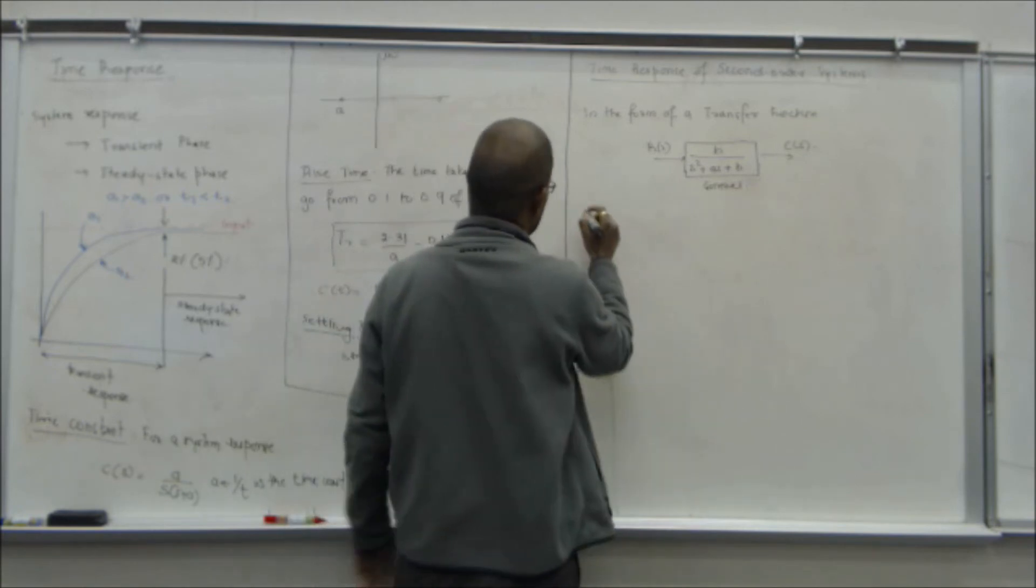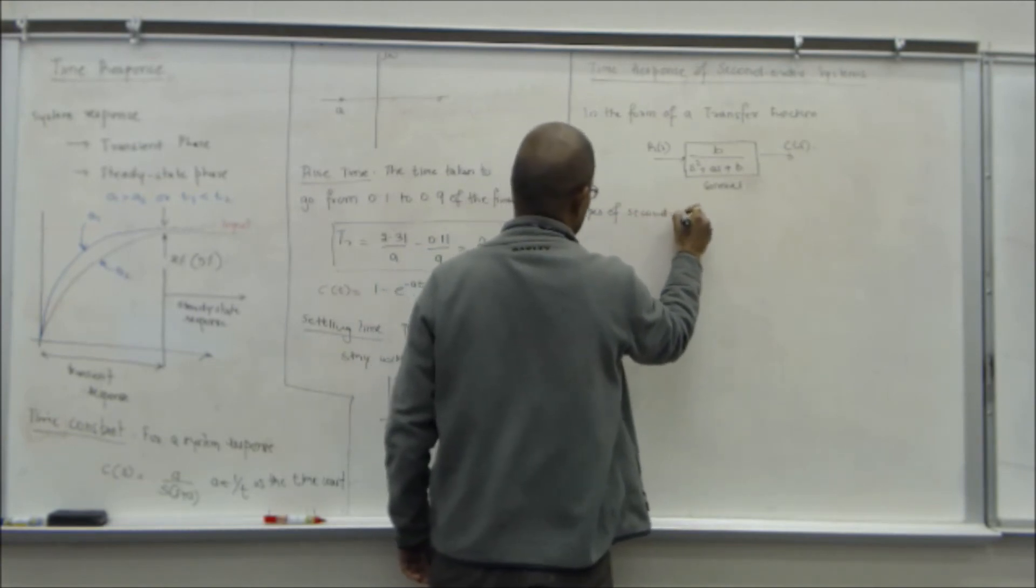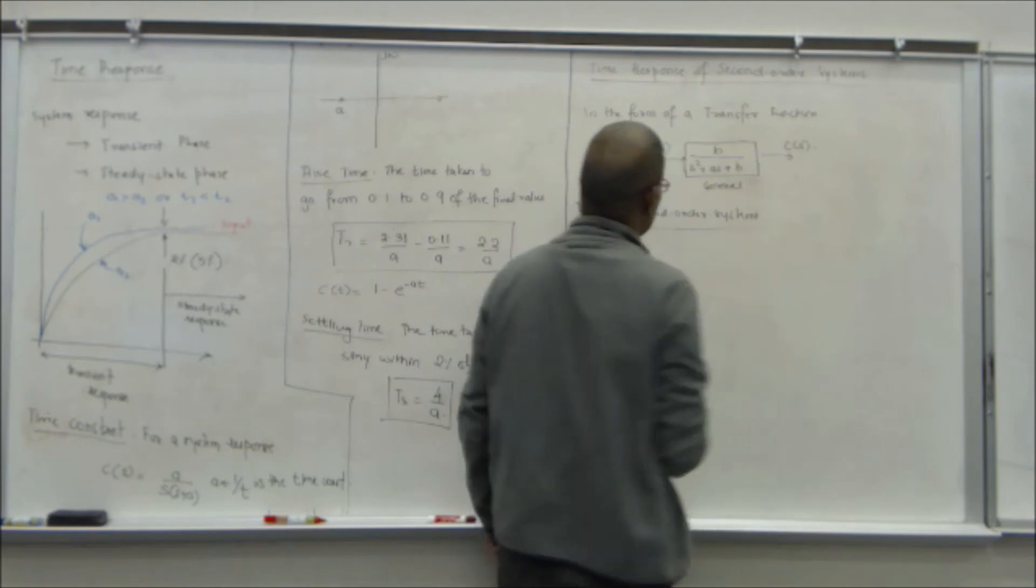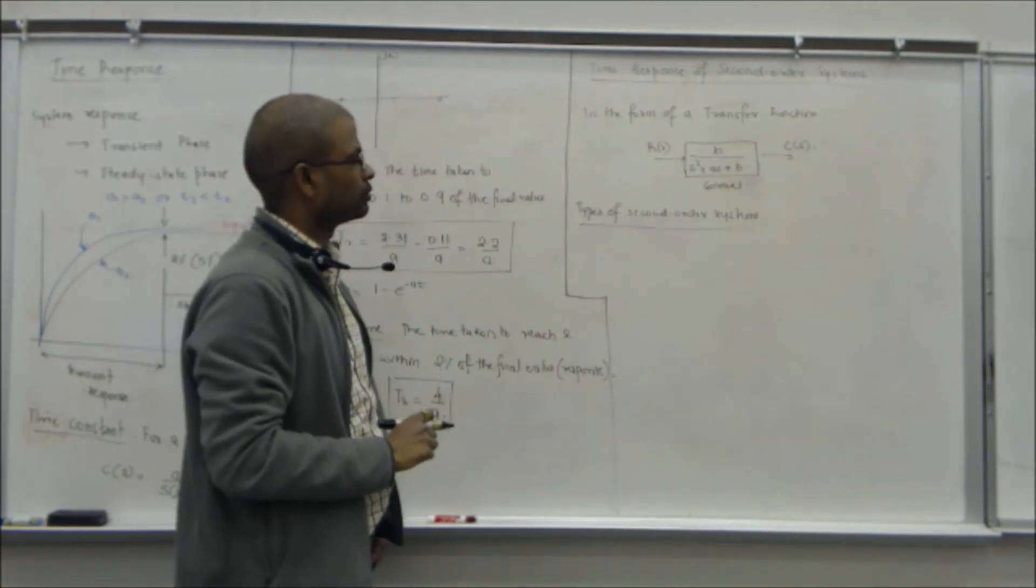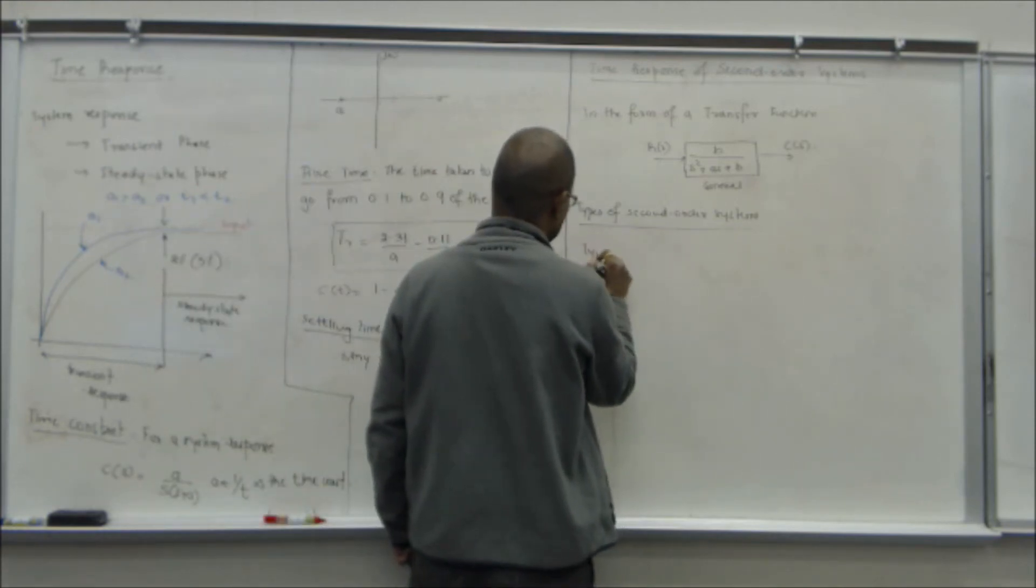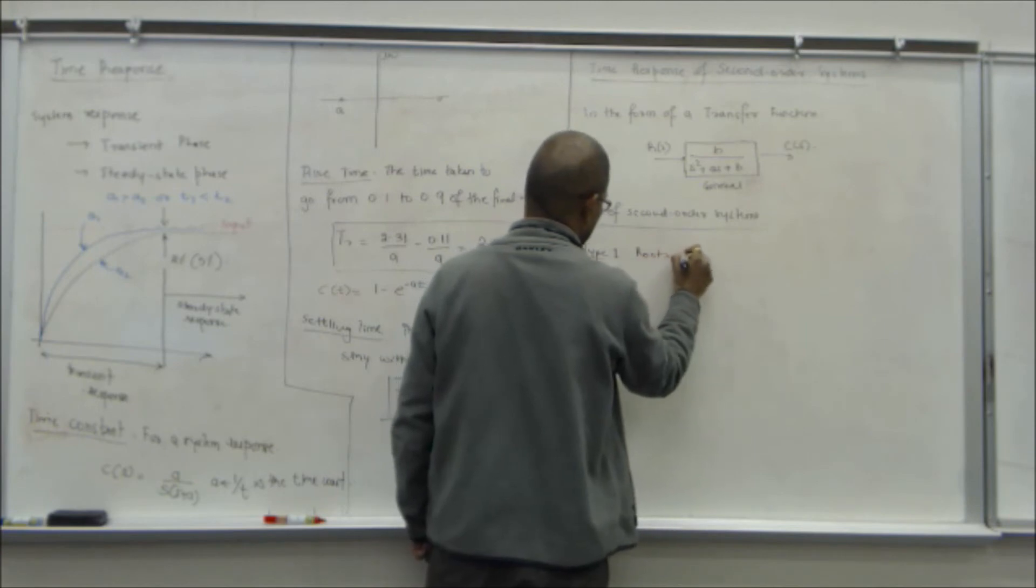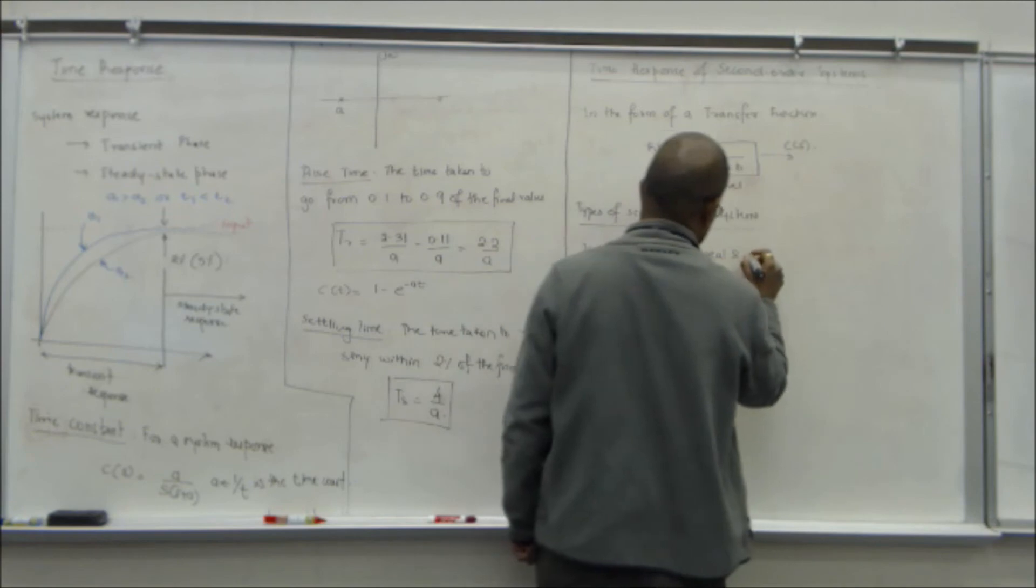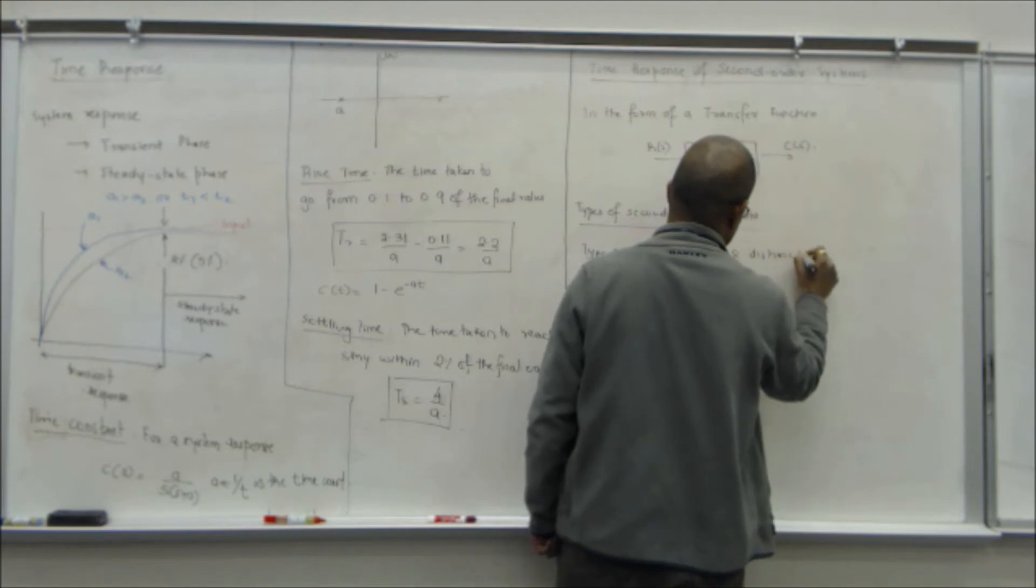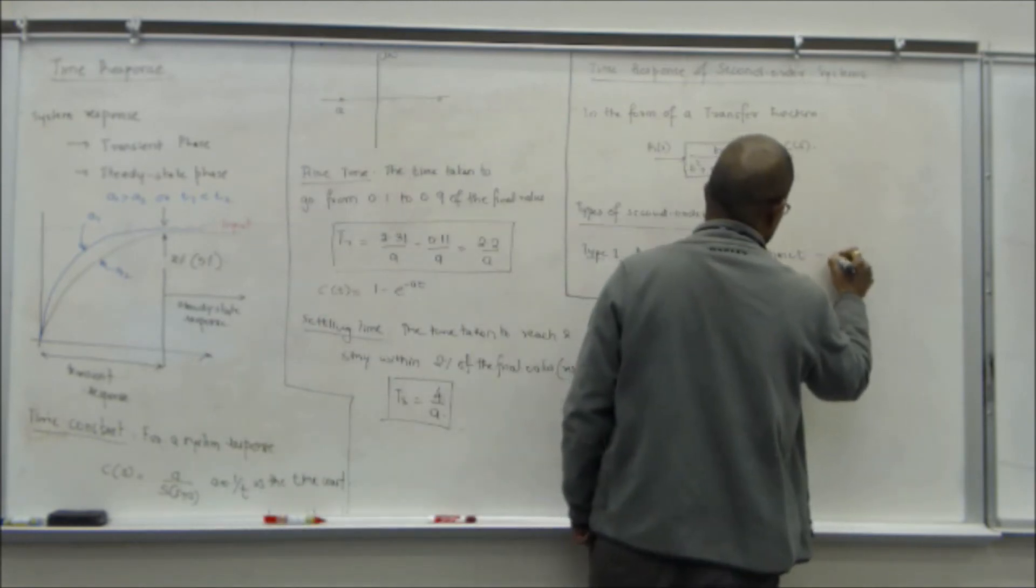The types of second order systems now, based on the roots of the second order polynomial, there are four types of second order system.